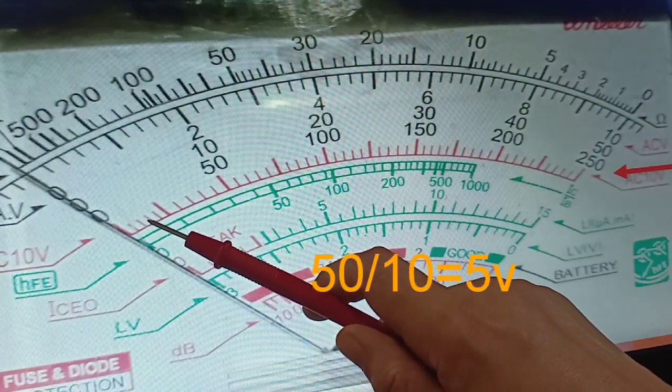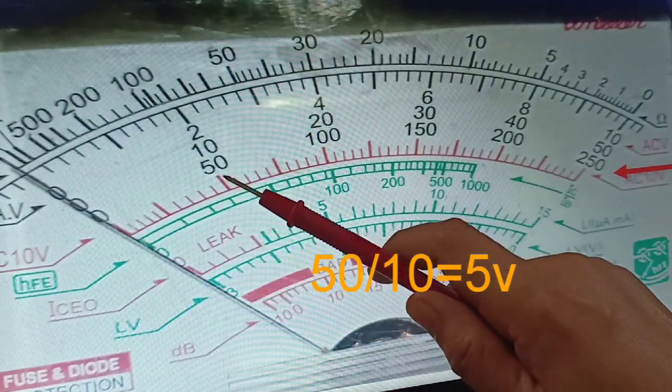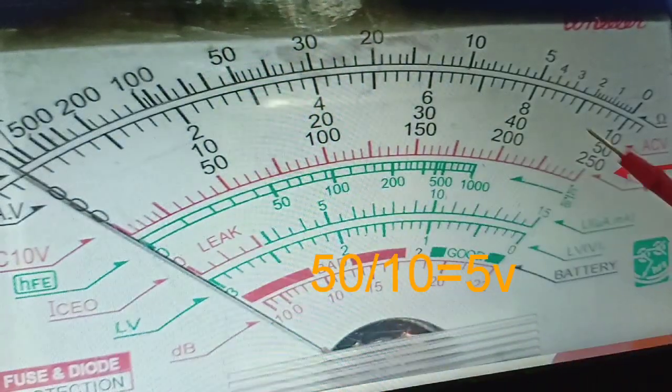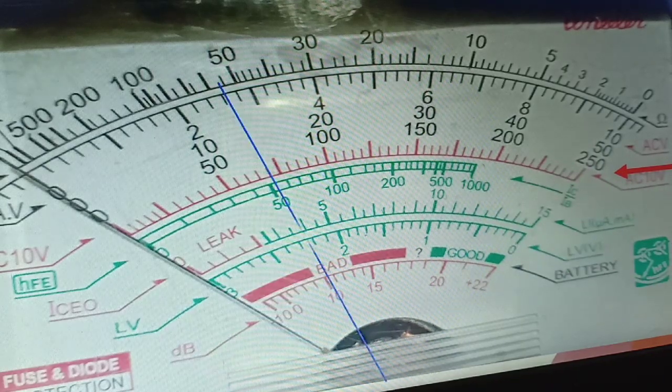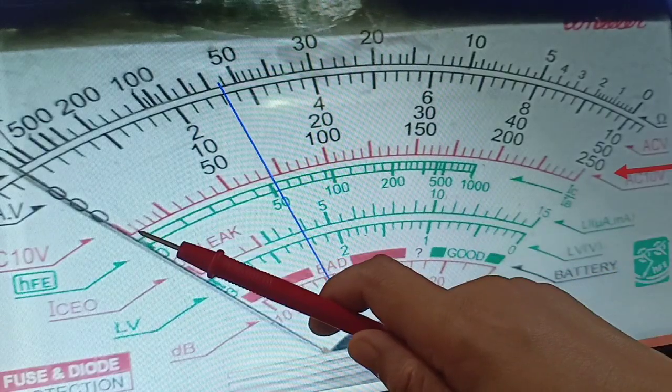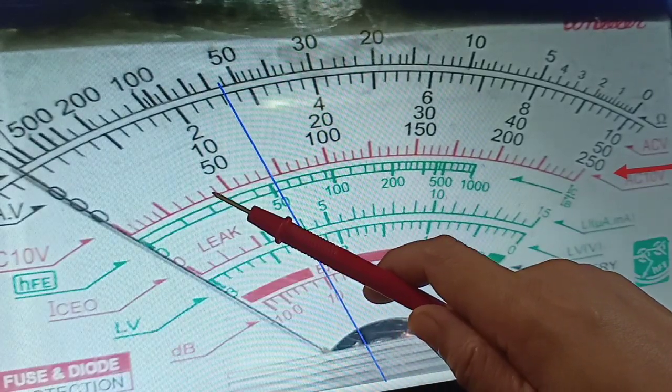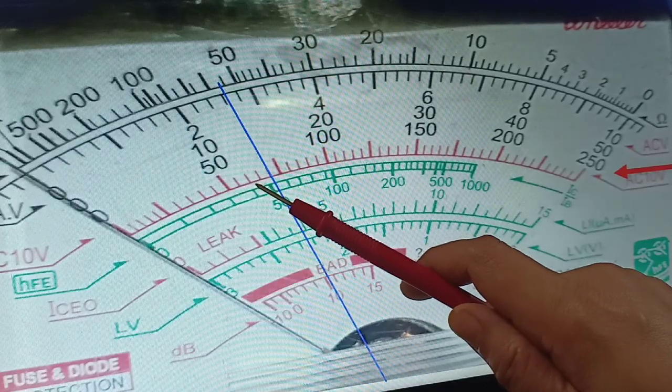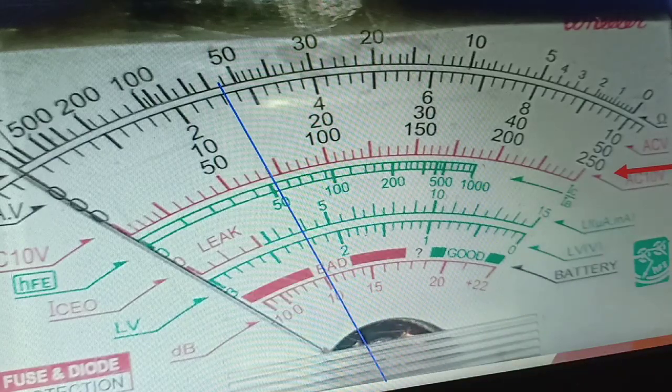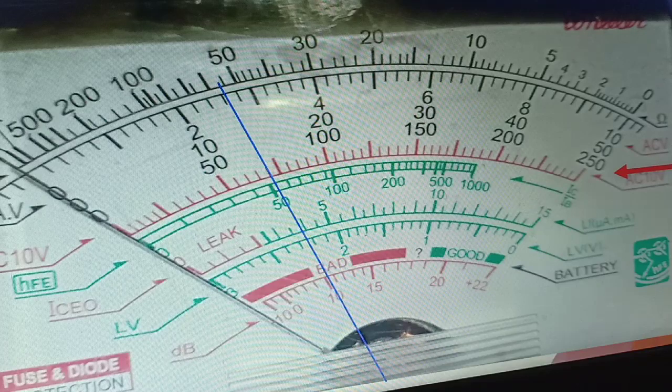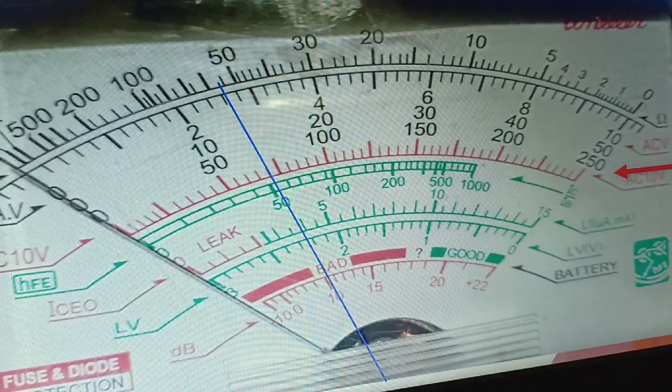Let us count: 5, 10, 15, 20, 25, 30, 35, 40, 45, 50, until we reach the 250 volts. So let us try to answer the given. Let us count: 5, 10, 15, 20, 25, 30, 35, 40, 45, 50, 55, 60, 65, 70. So the reading now is 70 volts.